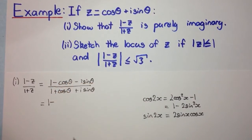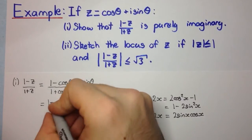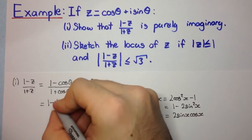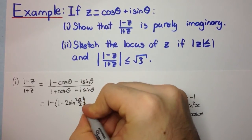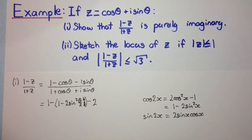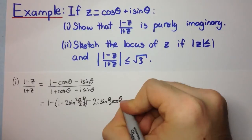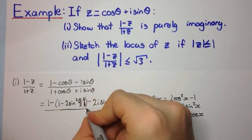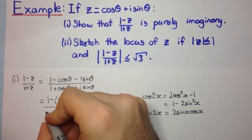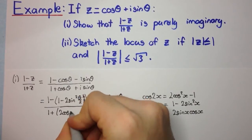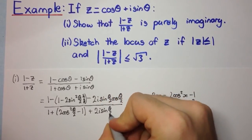Applying these, we replace cosθ using 1 minus 2sin²(θ/2), giving the numerator: 1 minus (1 minus 2sin²(θ/2)) minus 2i sin(θ/2)cos(θ/2). For the denominator we use 1 plus (2cos²(θ/2) minus 1) plus 2i sin(θ/2)cos(θ/2).